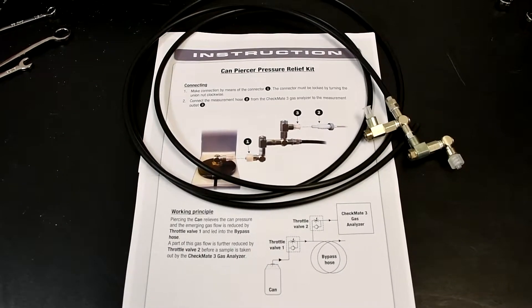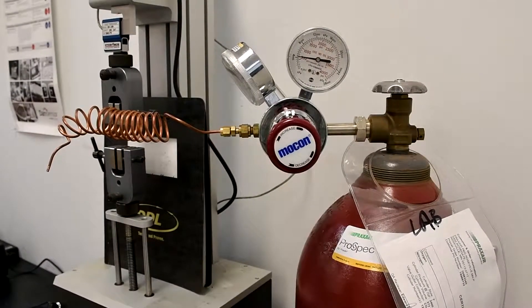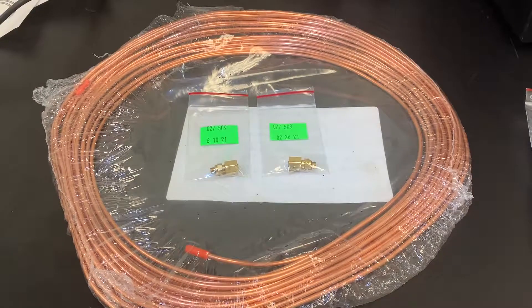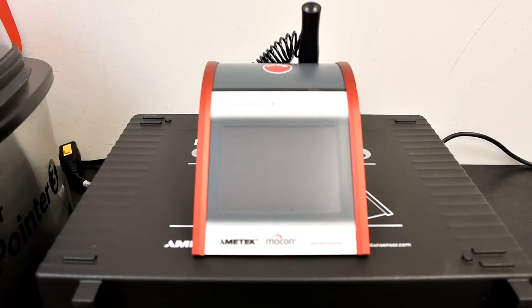Here's what you'll need. The pressure relief kit, included in your field verification kit. Gas tank, we recommend a T-size. Connections, connector fittings and copper tubing included in the field verification kit. The Dan Sensor Checkpoint 3.